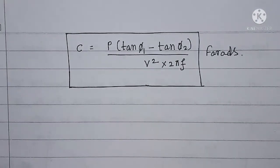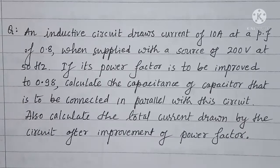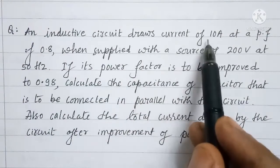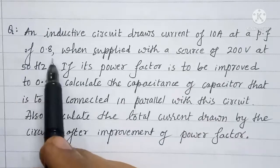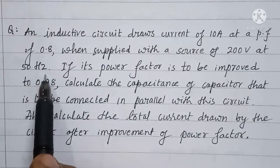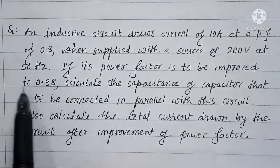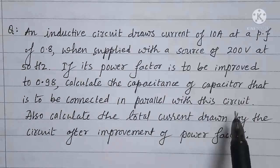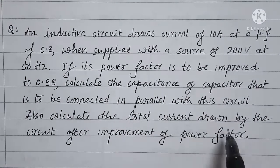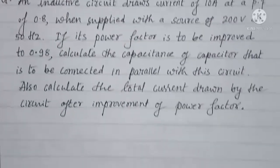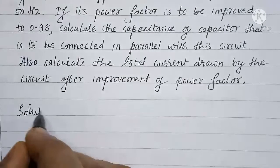Now using this relationship, we will solve two problems. Here is the first problem: An inductive circuit draws a current of 10 ampere at a power factor of 0.8 when supplied with a source of 200 volts at 50 hertz frequency. If its power factor is to be improved to 0.98, calculate the capacitance of the capacitor to be connected in parallel. Also calculate the total current drawn by the circuit after improvement of power factor.